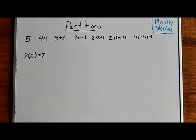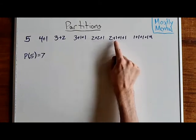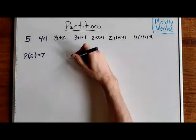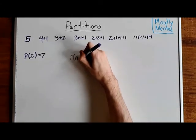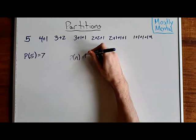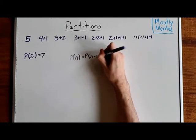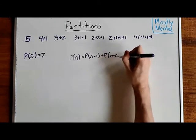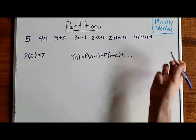Maybe we can find it in terms of smaller p of n? After all, if we take some of the coins out, we're still left partitioning the rest. So, if the first part is two, then we've still got three left to partition. And, following that logic, we would expect that p of n is p of n minus one, where the first part is one, plus p of n minus two, and so on.